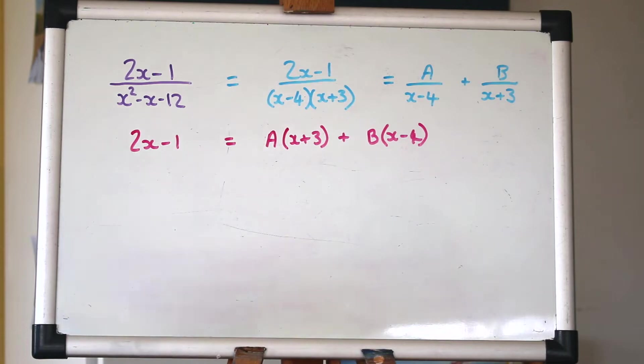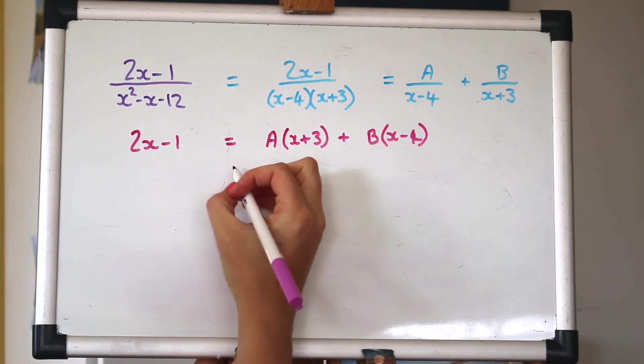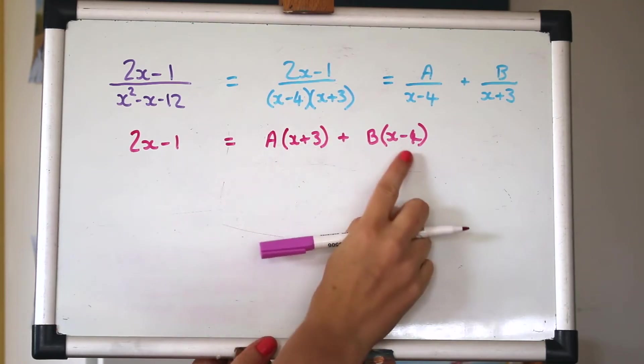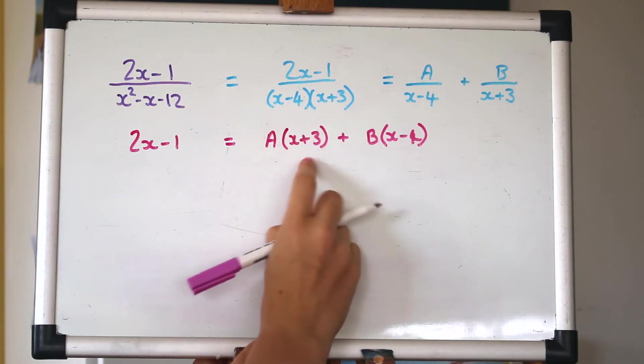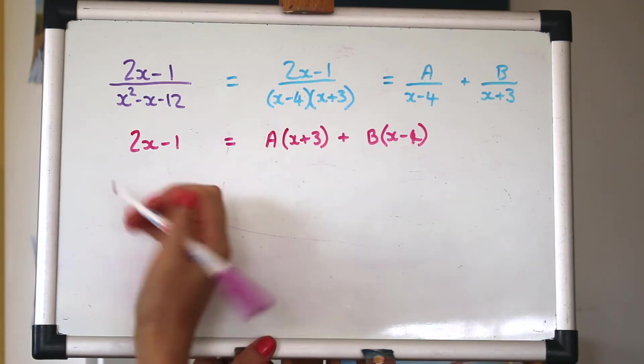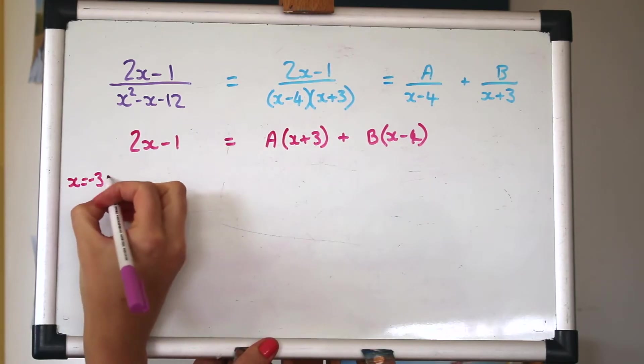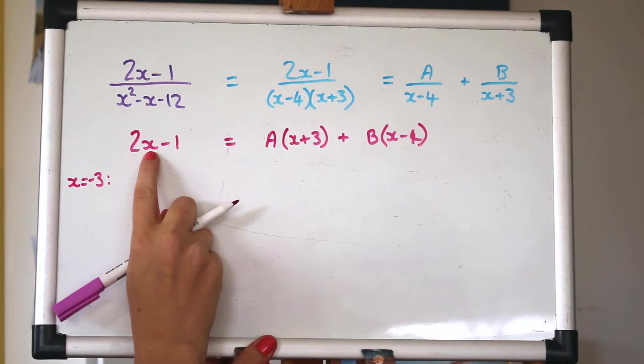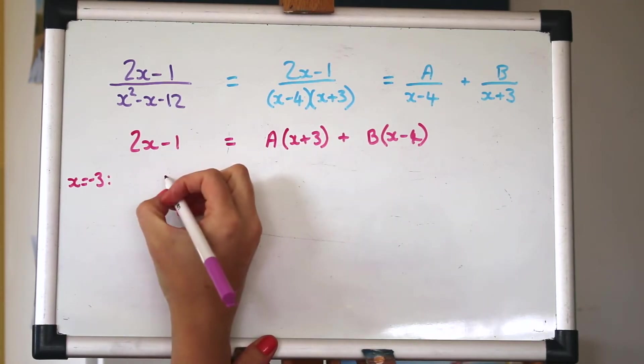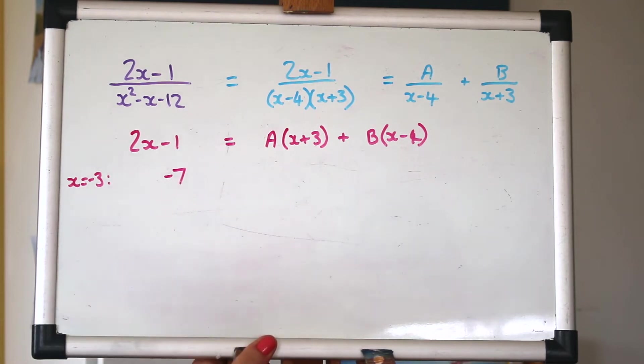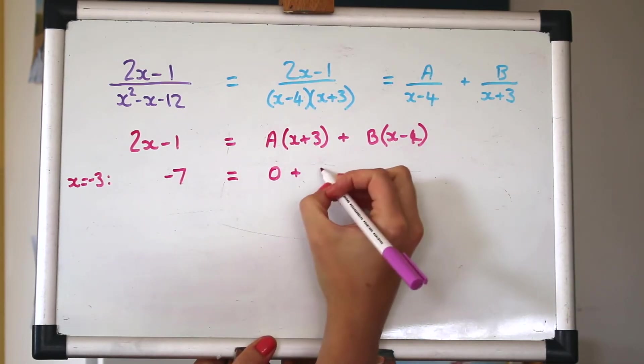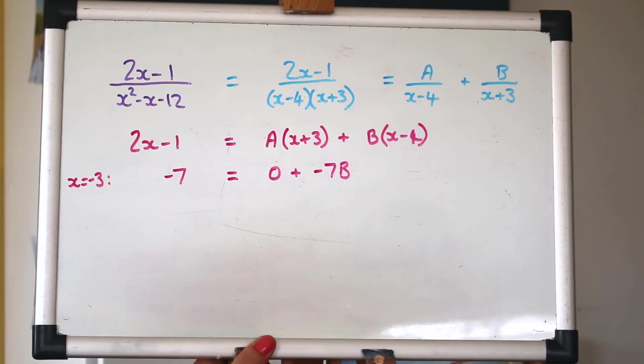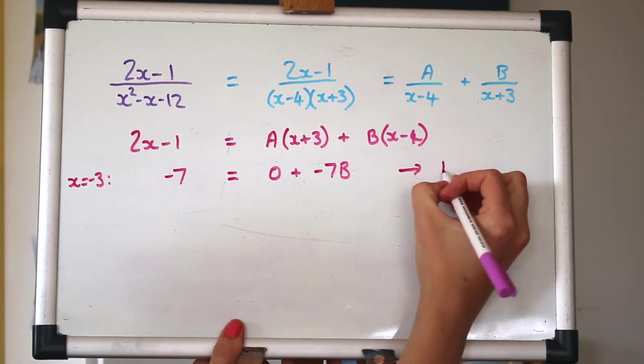So now, by multiplying everything we're left with this equation here. The next step that we can do is use some values of x to substitute in to create some equations. So you can be clever with the values of x that you pick. If we choose, for example, minus 3, then that will make that whole thing 0 and get rid of the a. So let's do that to start with x is minus 3. So on this side here, we'll have 2 times minus 3 minus 1. So that will be minus 5. No, minus 7. Good maths. And here we'll have 0, which is what we want. Minus 3 minus 4 is minus 7b. So minus 7 equals minus 7b. That tells us that b is 1.